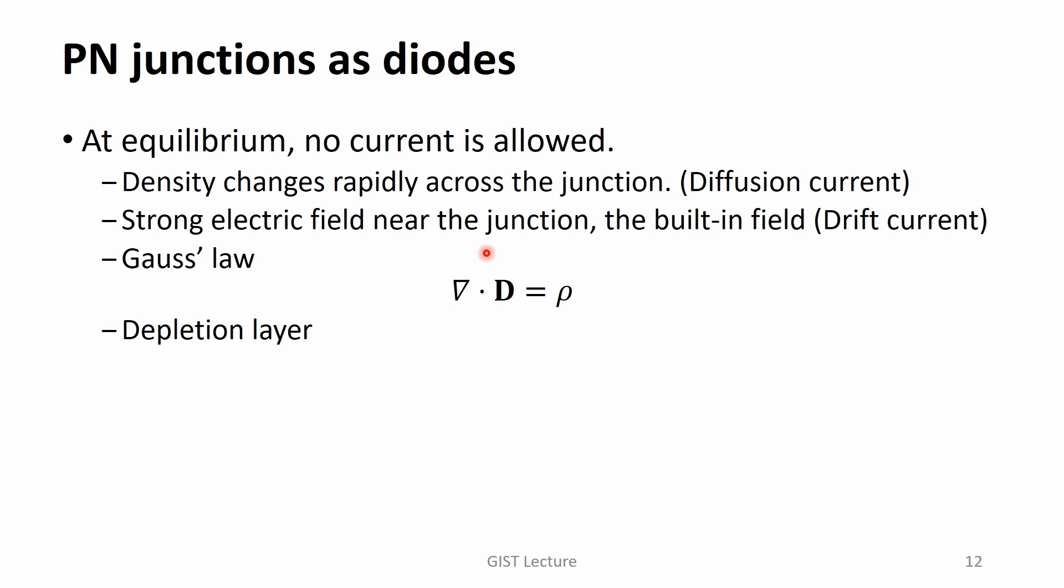One way to realize a diode is to fabricate a p-n junction. At equilibrium, no current is allowed. However, the electron hole densities changes rapidly across the junction. It means that we have a huge diffusion current density. In order to make the net current density zero, a strong electric field is needed. The electric field existing even at equilibrium is called the built-in field. The drift current density due to the built-in field cancels out the diffusion current density. Gauss law states that the net charge density is needed to change the electric field. The required net charges are provided by the depletion layer.